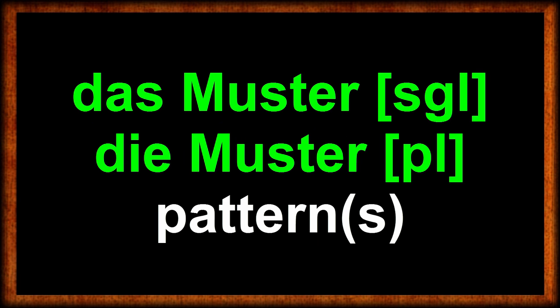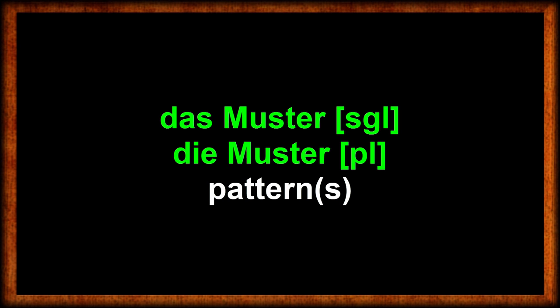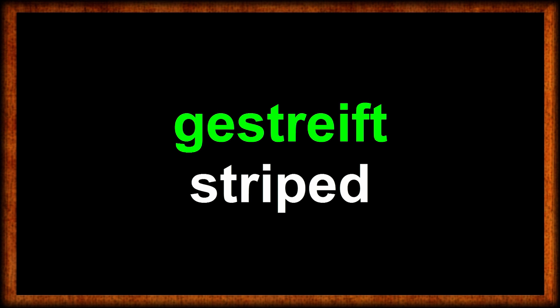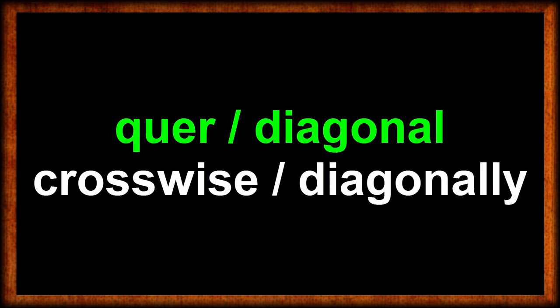In addition to that, you could also refer to the pattern of a colored object. Der Teppich ist gelb-blau kariert — the carpet is yellow-blue checkered. What an ugly carpet that is! Here are some adjectives to describe different patterns: gestreift — striped. Kariert — checkered or plaid. Quer — diagonal or diagonally.